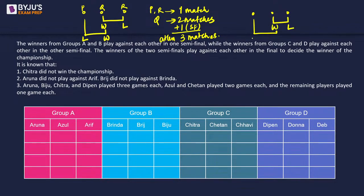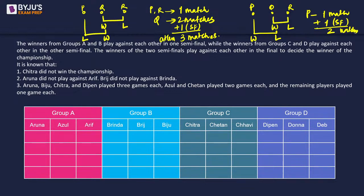In the other scenario: Q and R play, Q wins, then Q plays P and P wins. Here, P has played one group match and will play at least one more in the semi-finals — possibly three total if P reaches the finals. Q played two matches: one against R, one against P. R plays only one match.